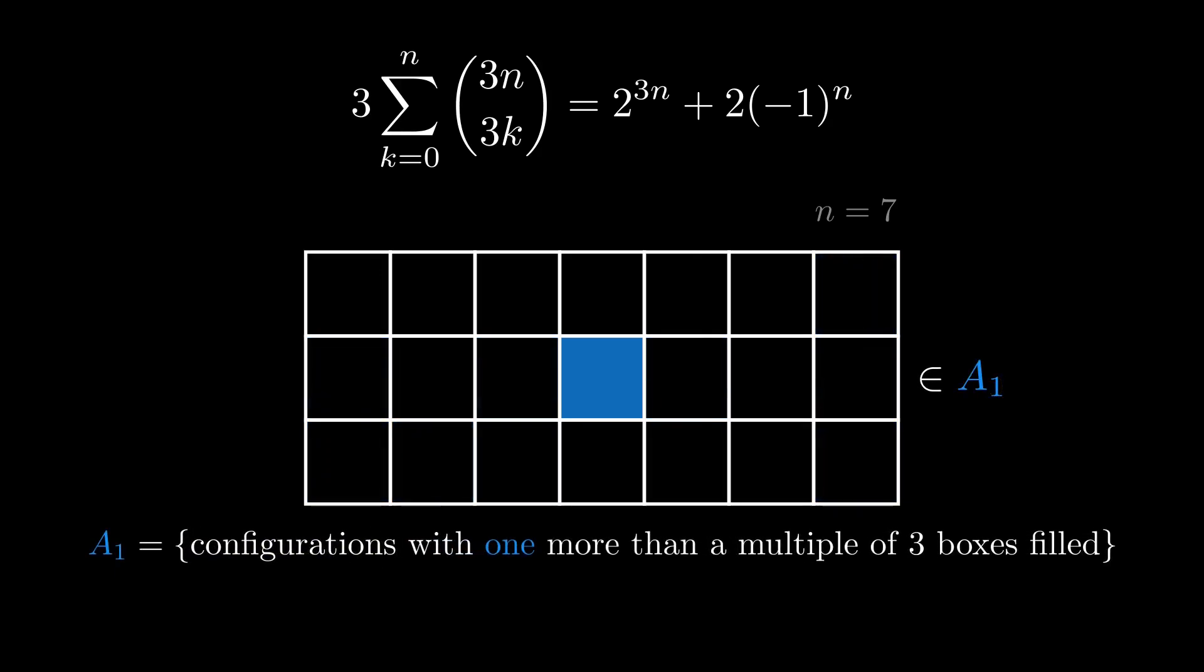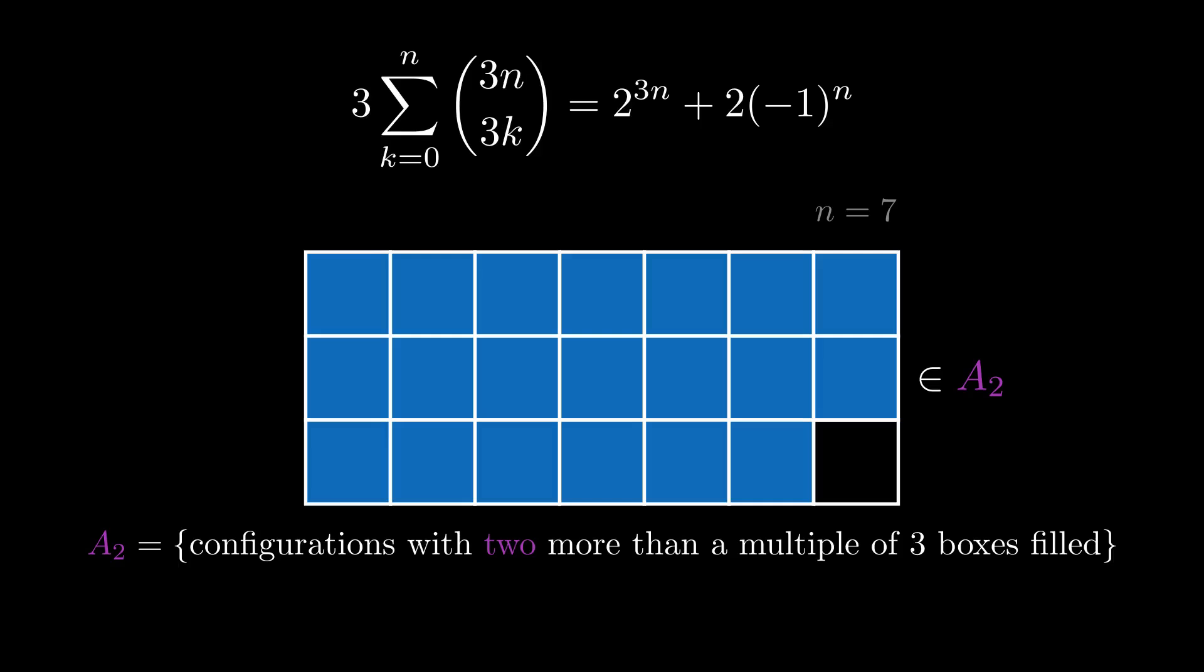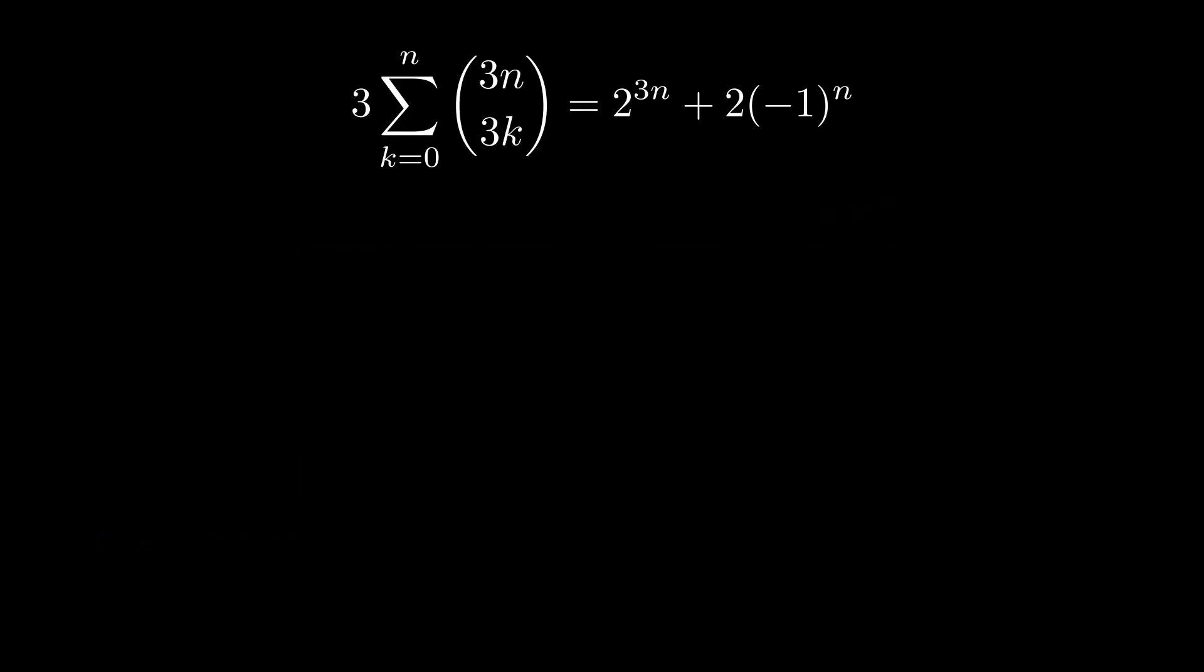So the size of set A0 is the sum of 3n choose 3k. Set A1 consists of the configurations where the number of filled boxes is one more than a multiple of three. And set A2 are those with two more than a multiple of three boxes filled. It should be clear that because they're disjoint, the size of A0 plus the size of A1 plus the size of A2 is 2 to the 3n.